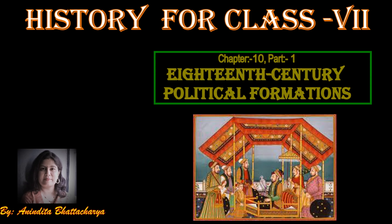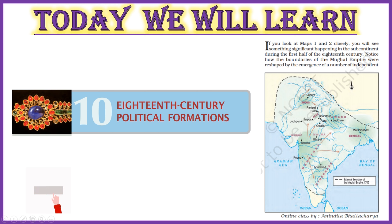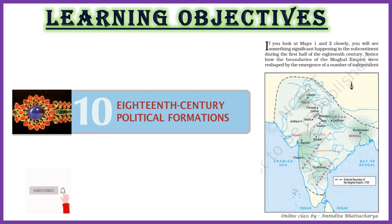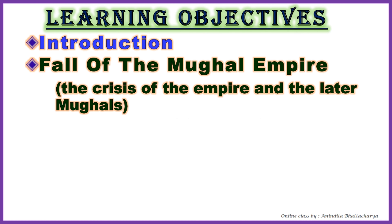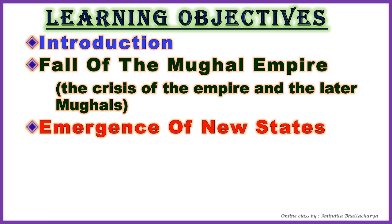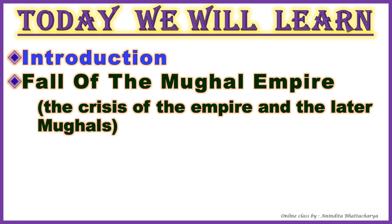Hello, my dear students, welcome to my SST class. Today we will discuss a new chapter — the last chapter of your history book — Chapter 10: 18th Century Political Formation. This chapter tells us about the last page of medieval history. The chapter contains interesting concepts like reshaping of Mughal territories, fall of the Mughal Empire, the crisis of empire, the later Mughals, emergence of new states, old Mughal provinces, the watan jaigirs, and seizing independence.